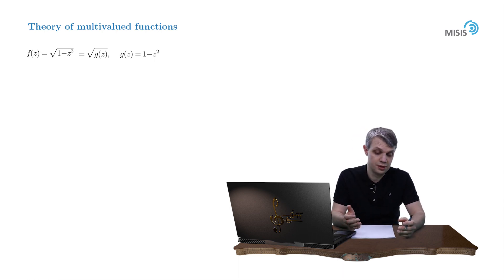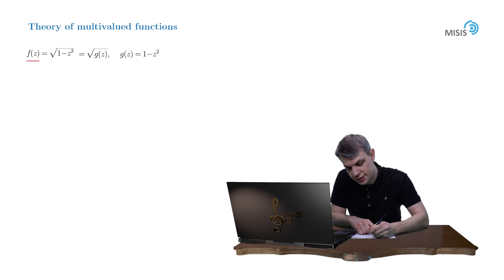According to the general theory, the roots of the g function are the branch points of the initial function f. So the roots are z equals plus minus 1.